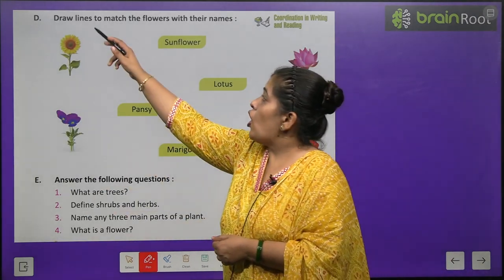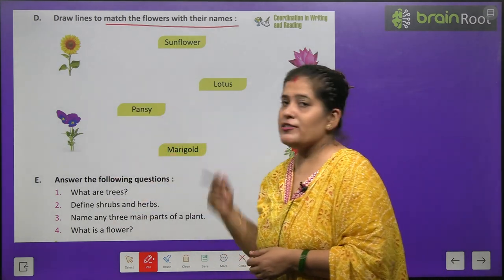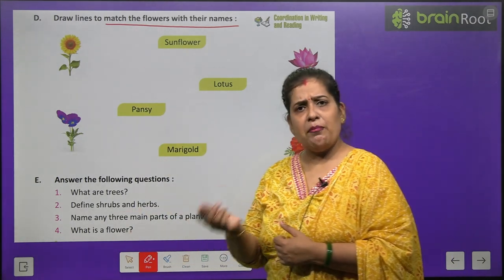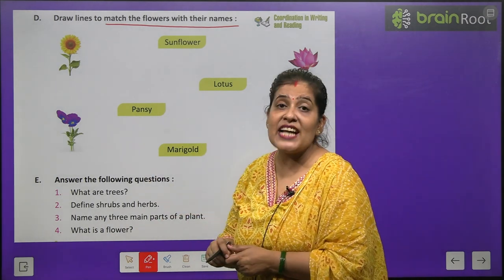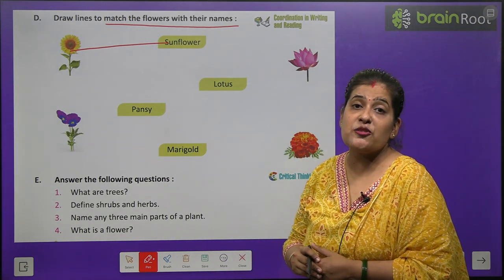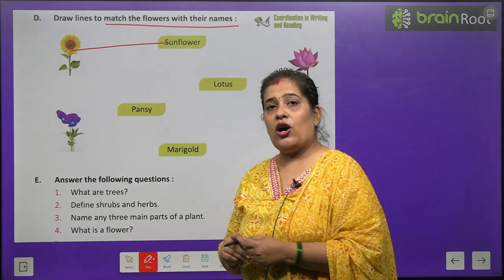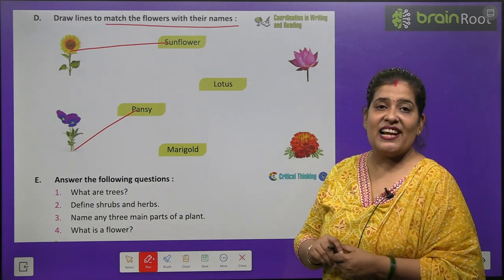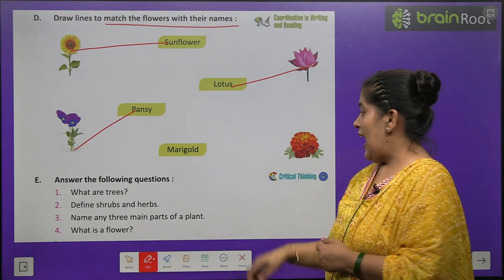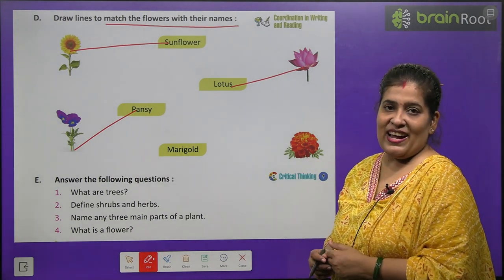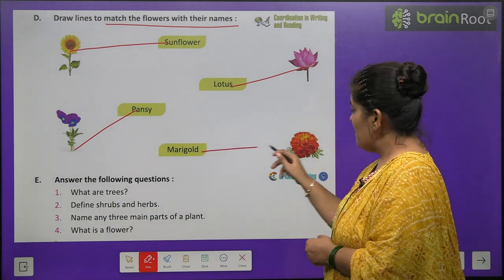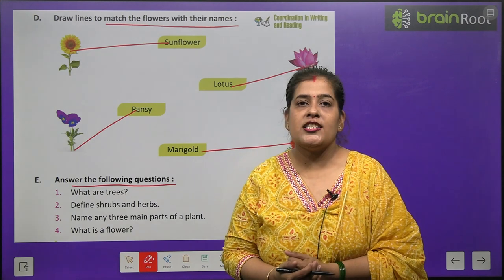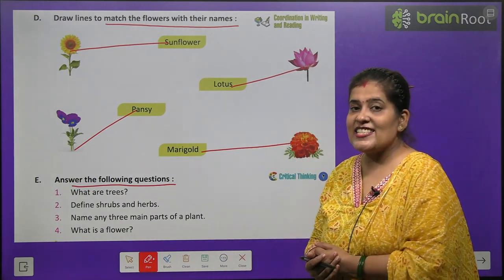Now exercise D — draw a line to match the flower with their name. Yahan pe kuch sundar flowers ki picture hai, aapko unke naam se unko match karna hai. Sabse pehla flower sunflower ka hai — jise hum surajmukhi kehte hain. Number two, blue color ka flower hai Pansy — P-A-N-S-Y. Number three is lotus — L-O-T-U-S — our national flower. And in last there is a picture of marigold — jise hum gende ka phool kehte hain. In last exercise, answer the following questions — aap ek baar achhe se apna chapter read karenge aur questions ke answer aap khud likhenge.